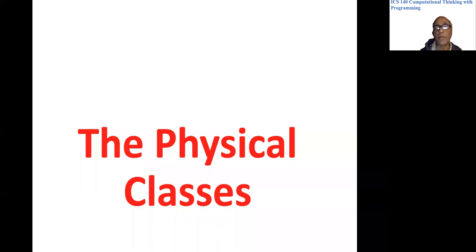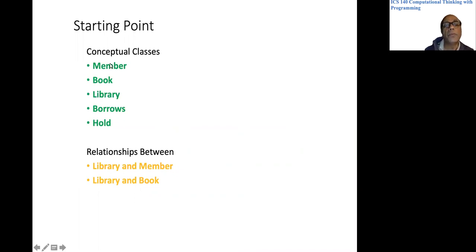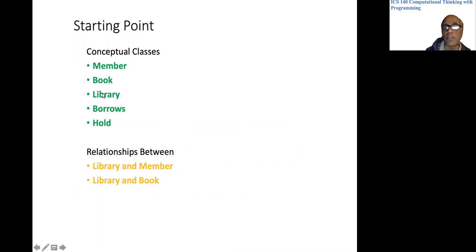Our main activity would be to come up with the design of the physical classes. Our starting point is the conceptual classes and relationships between them. We did the analysis last week and came up with the conceptual classes member, book, and library — so there were three conceptual classes.